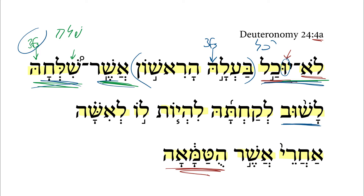He is not able to return — qal infinitive construct plus the lamed of the verbal root shuv. He is not able to return to take her. Here we have a qal infinitive construct of the verbal root lachach. Let me point out here: this lamed is not this lamed. The lamed of the root has gone because of the infinitive construct in the qal, and this is the lamed preposition — to take her — third feminine singular pronominal suffix. So that first husband is not able to return to take her, to exist — qal infinitive construct of the verbal root haya plus that lamed prefix — not able to return to take her to exist for him as a wife.